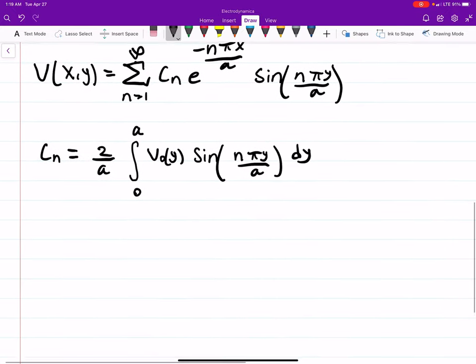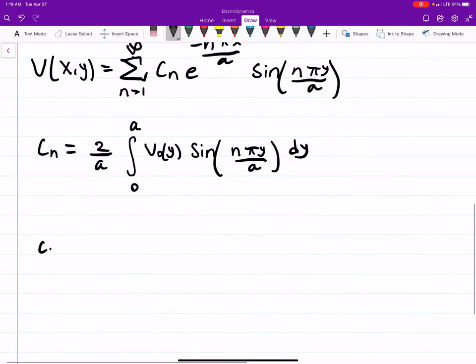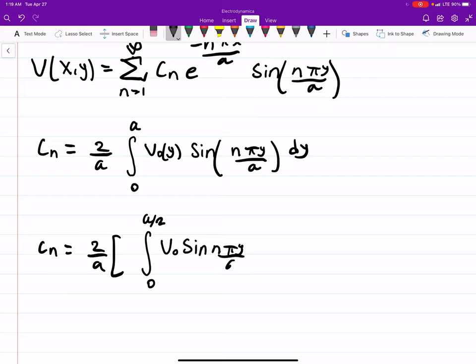And now essentially what we're going to do is we want to find the constant here. So c_n is equal to 2 over a, and what's happening now is this integral will be broken up because the V₀ of y changes. So from 0 to a over 2, it's positive V₀ sine nπy over a dy. I'm just going to factor out the minus from a over 2 to a, V₀ sine nπy over a dy.